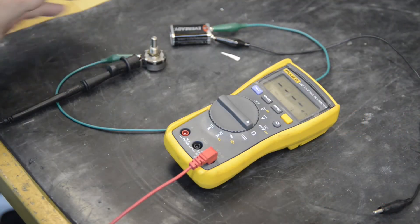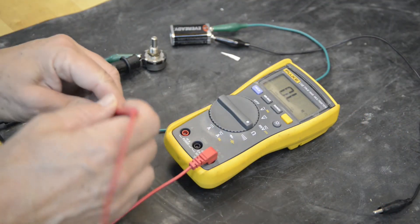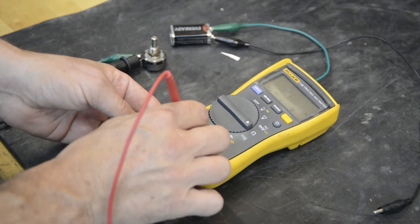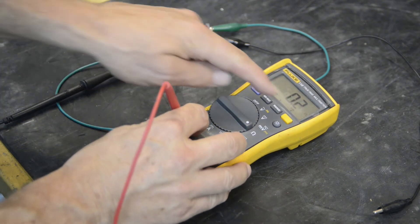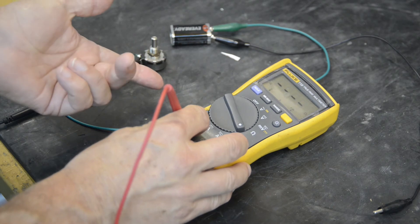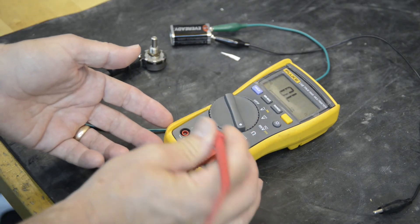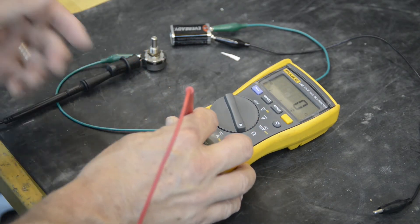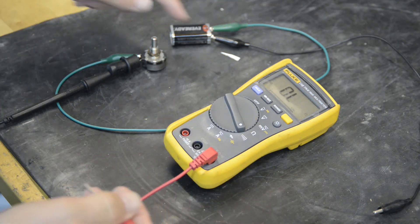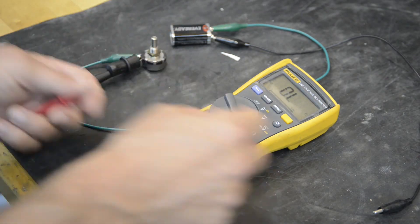So with the new fuse, I should have zero ohms here. And I do. I have good continuity. So it definitely was the fuse. So now we'll hook it back up to our test setup.